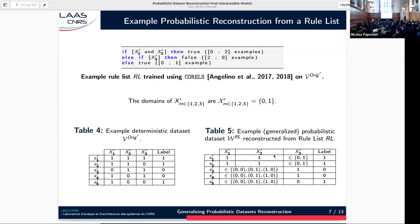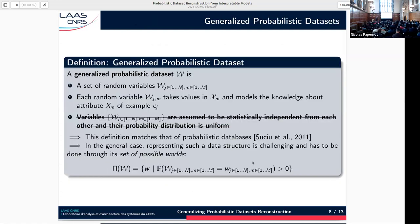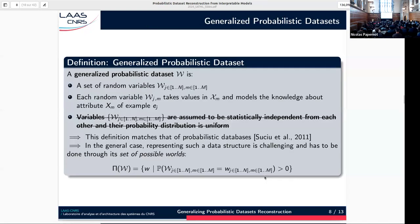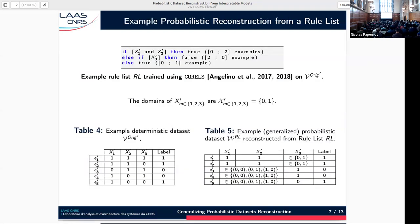So now we don't call this a probabilistic dataset — we call it a generalized probabilistic dataset. Formally, a generalized probabilistic dataset, just like a probabilistic dataset, is a set of random variables, one for each attribute of each example, modeling the knowledge we have regarding that attribute. But now we do not assume the variables are statistically independent, and we do not assume they are uniformly distributed. This definition is exactly that of a probabilistic database, and the only way to represent it in general is through its set of possible worlds — its set of possible instantiations.